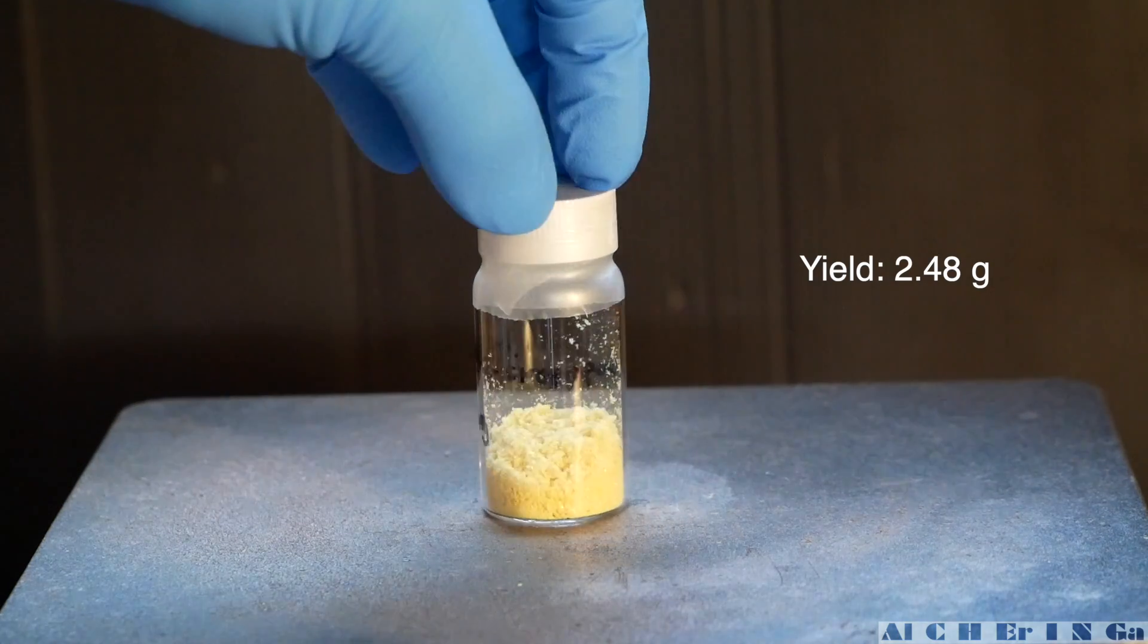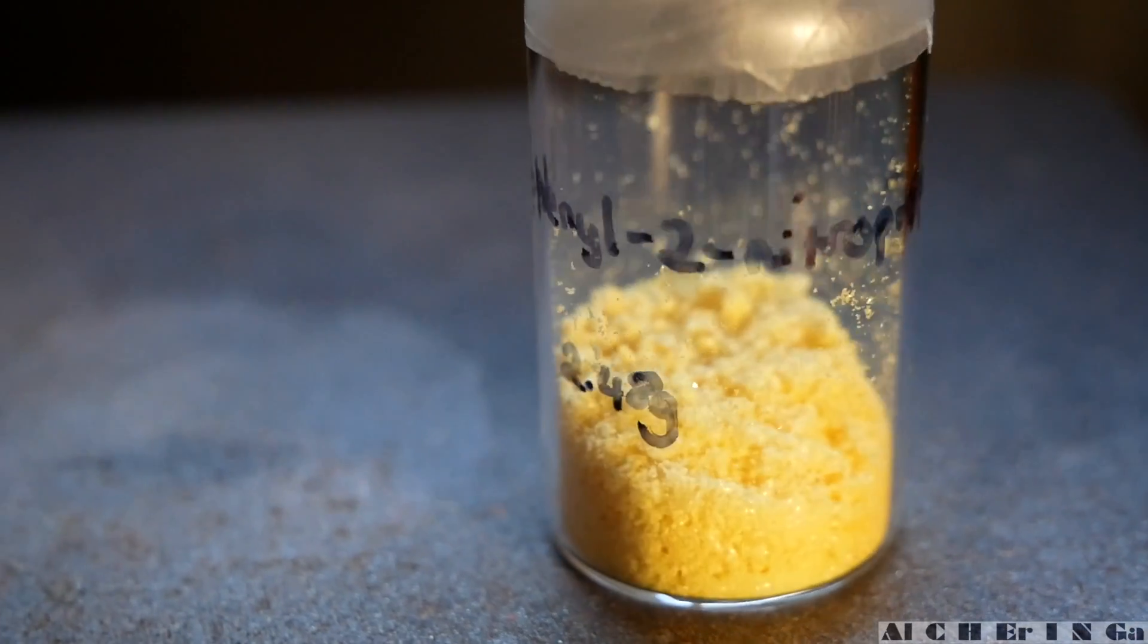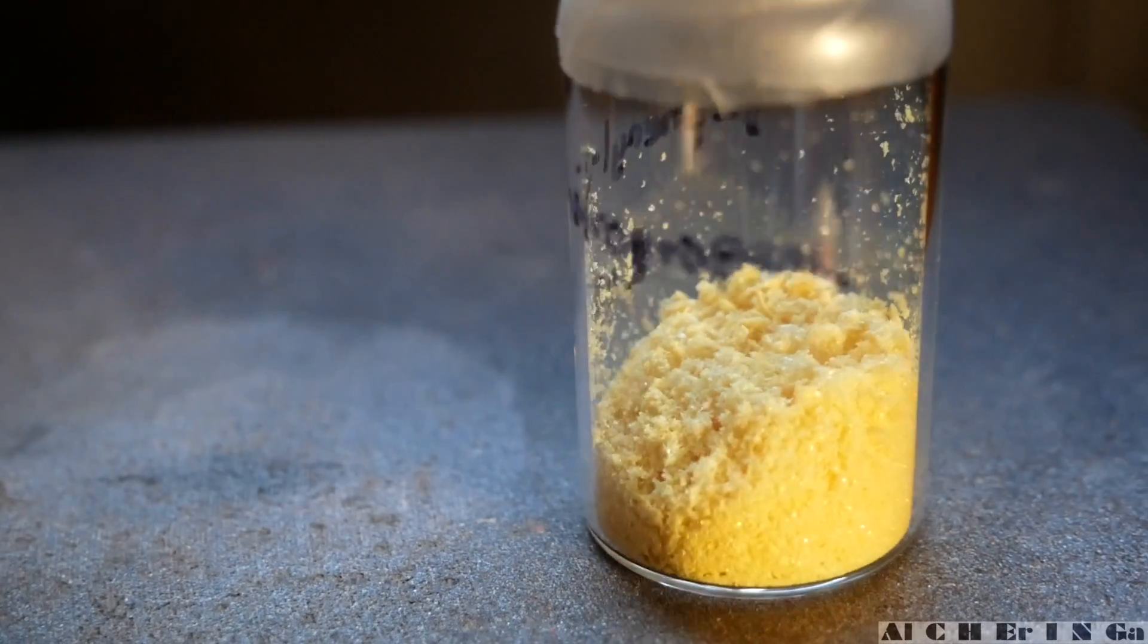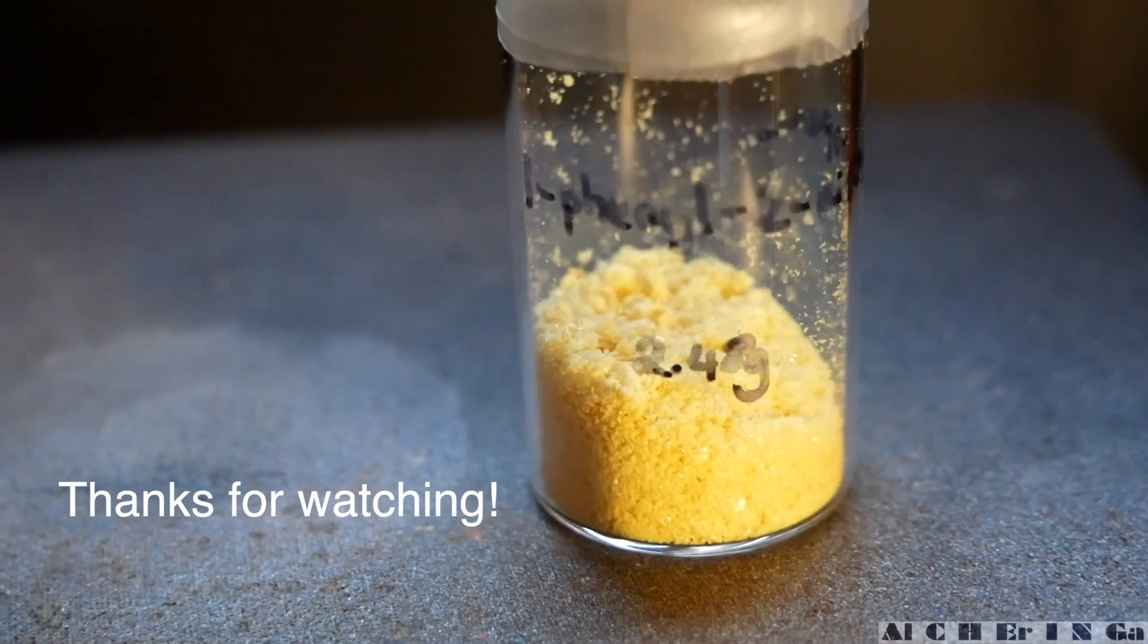The yield of the nitropropene is 2.48 grams, which is okay. Transfer the material into a glass vial and seal it off with parafilm. Store the material in a cool, dark and dry place.